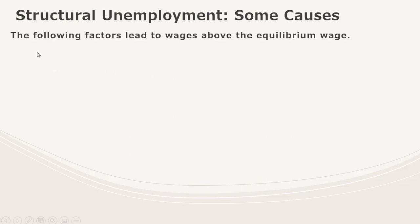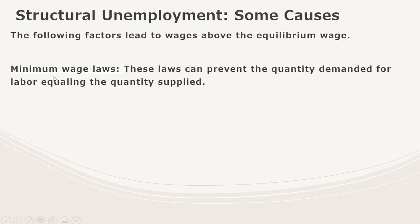Some causes: the following factors lead to wages above the equilibrium wage. First, minimum wage laws. These laws can prevent the quantity demanded for labor from equaling the quantity supplied — essentially acting as a price floor.